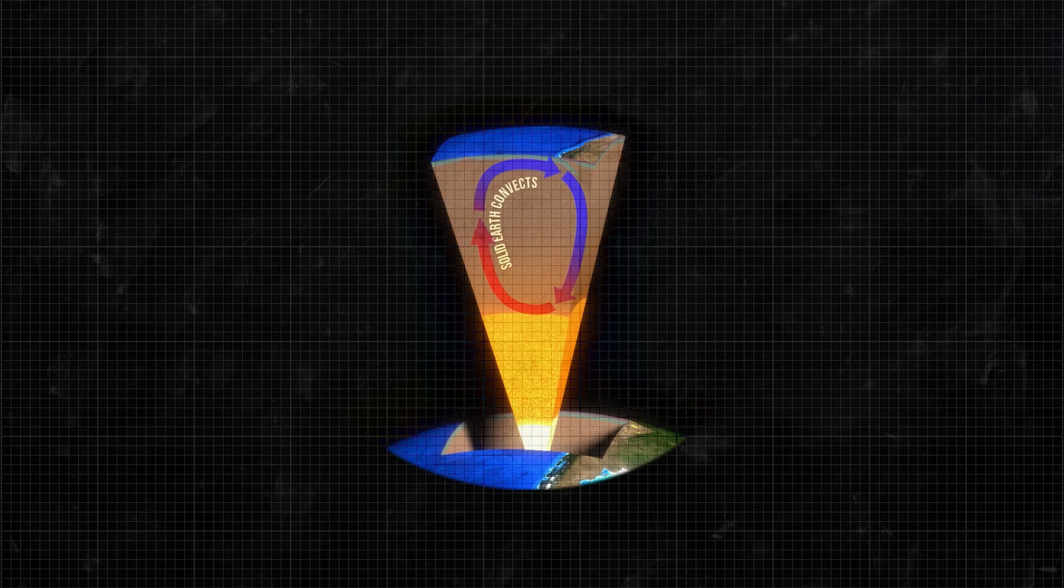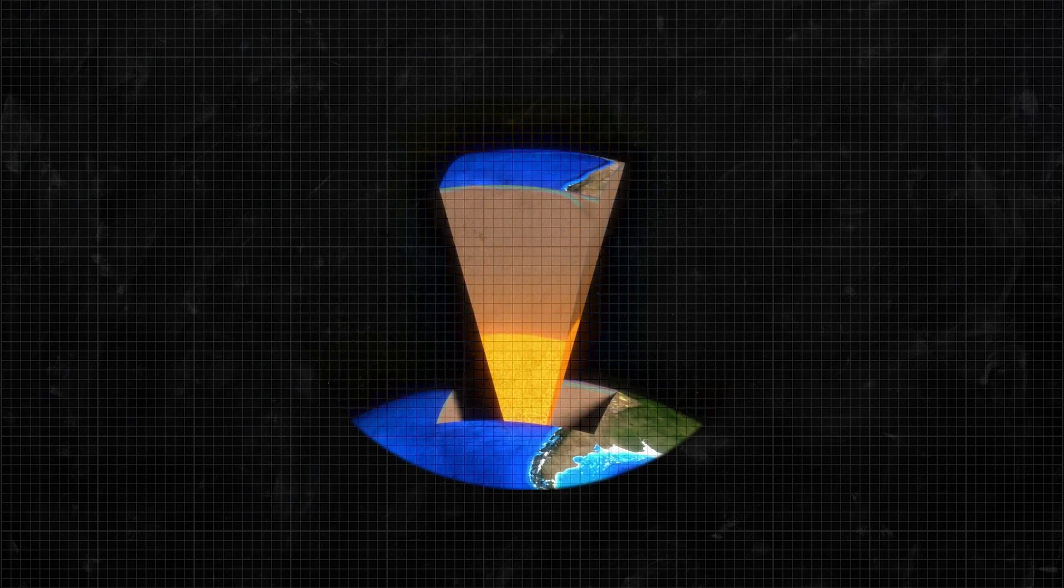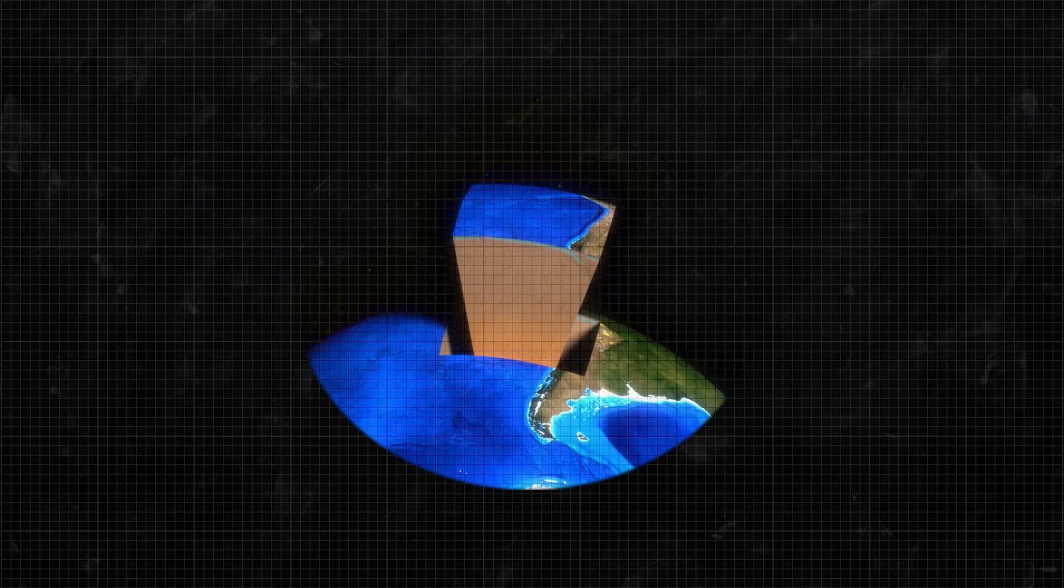Second thing, plate tectonic theory explains how the solid earth convects. Simply put, the old lithospheric plates sink into the mantle and are destroyed at subduction zones, and new plate material is created at oceanic spreading ridges.